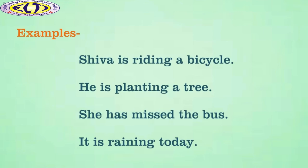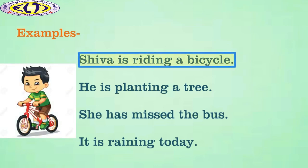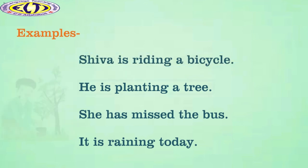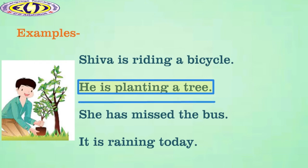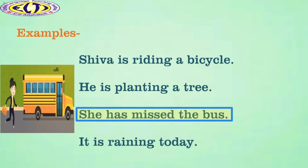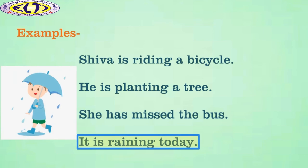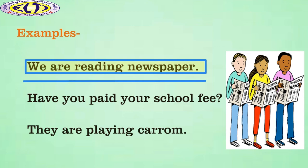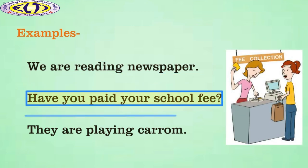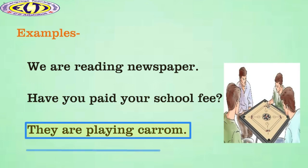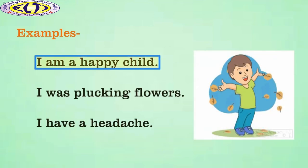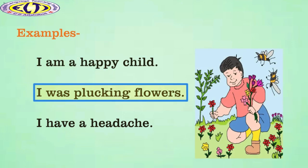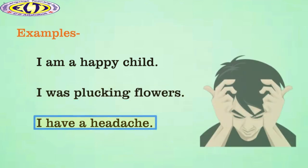Let us see some more examples of the verb agreement with the subject in number and person. Please repeat after me. Shiva is riding a bicycle. He is planting a tree. She has missed the bus. It is raining today. We are reading newspaper. Have you paid your school fee? They are playing carom. I am a happy child. I was plucking flowers. I have a headache.